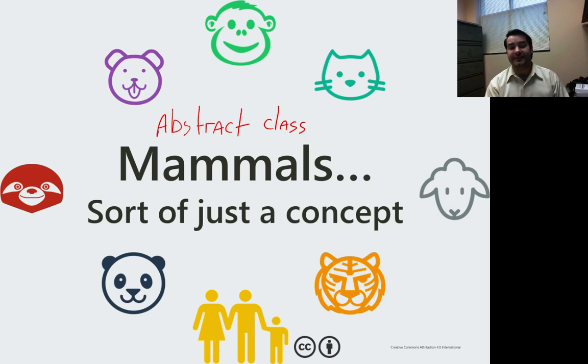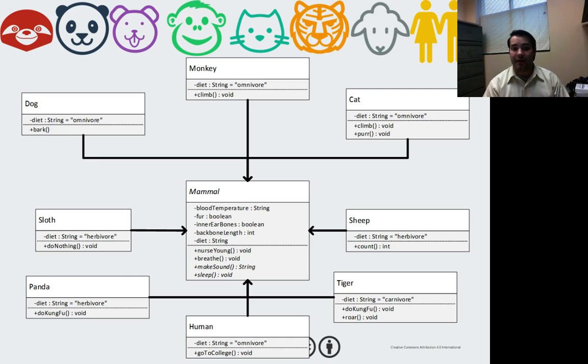As we start to build on this idea, when we start to look at something like UML diagrams, one of the things you'll see is all these different animals, they inherit from a mammal class. But notice a few different subtle nuances. My mammal name, for example, is in what is known as italics. That's just to indicate that this is an abstract class. But then take a look at these two guys right here. These are known as abstract methods.